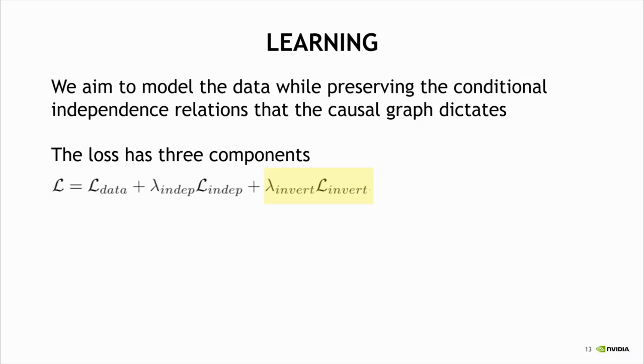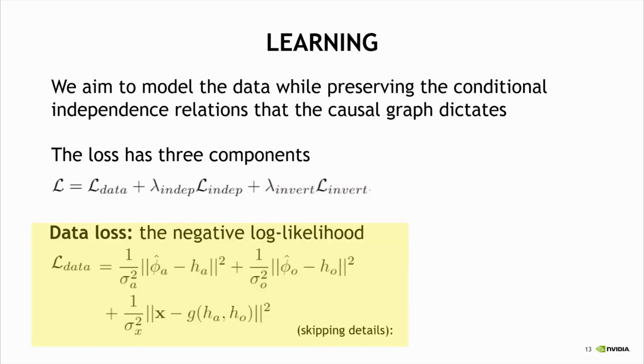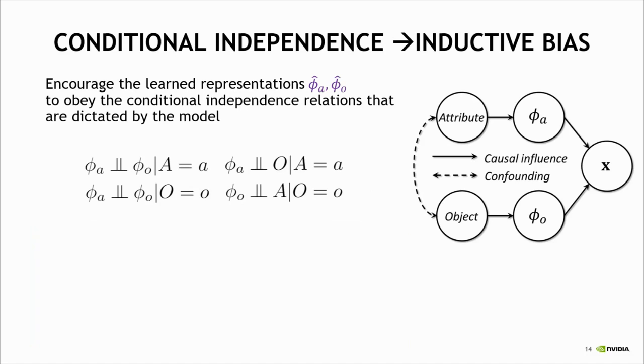The first term, the data loss, is the negative log likelihood that was shown in the previous slide. The second term encourages the learned latent representation of the attribute and object to obey the conditional independence relations that are dictated by the structured causal model. We have four such independence relations.